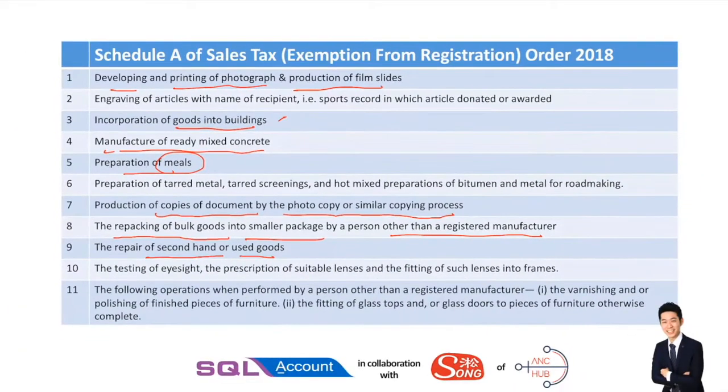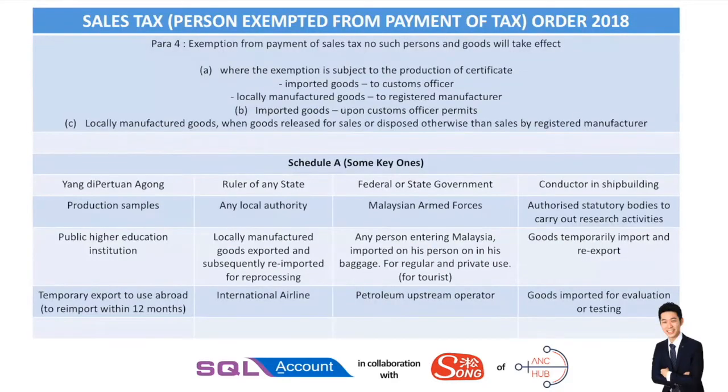These are some of the items on the list — it is not the full list. If you want to check the full list, always refer to Schedule A. Now, who are exempted from payment of tax?